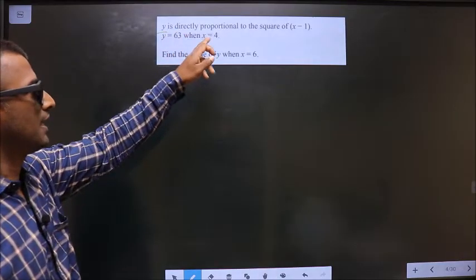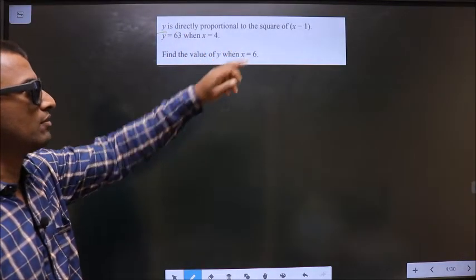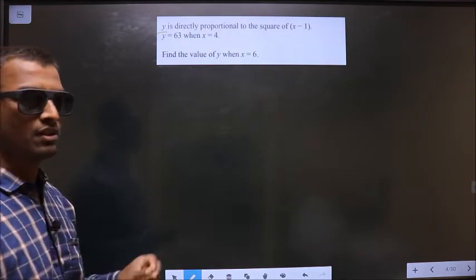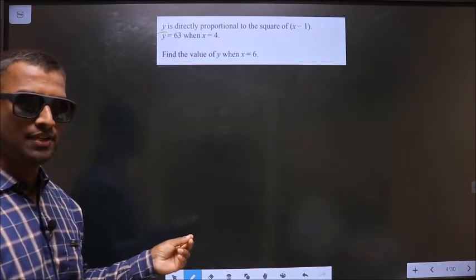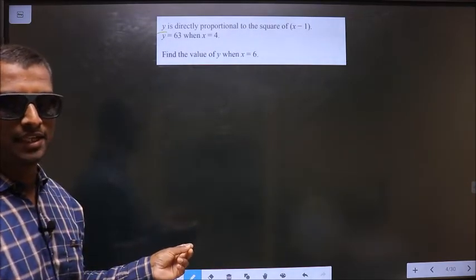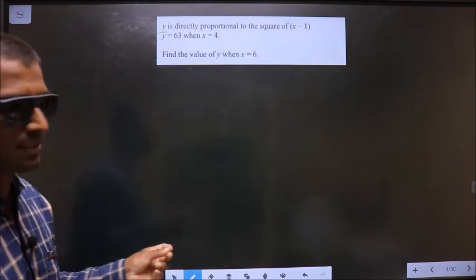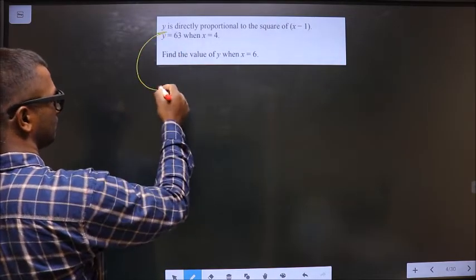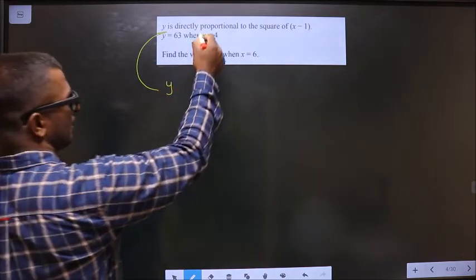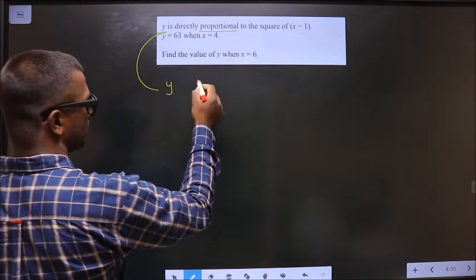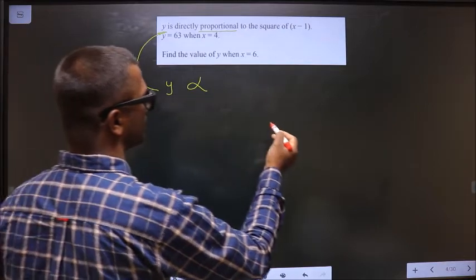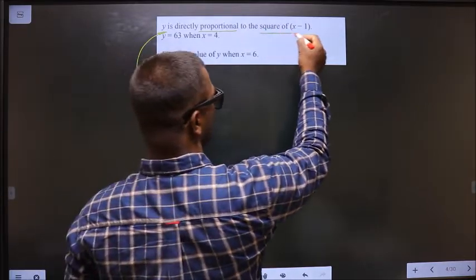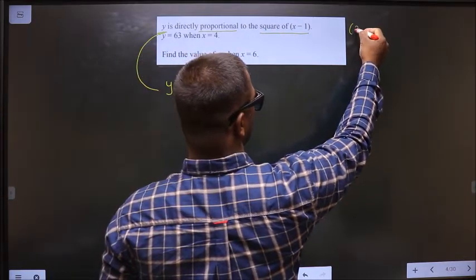y is directly proportional to the square of x minus 1. First, I will convert the given statement into a mathematical equation. Starting with y, he said proportional, so put proportional symbol to the square of (x minus 1).